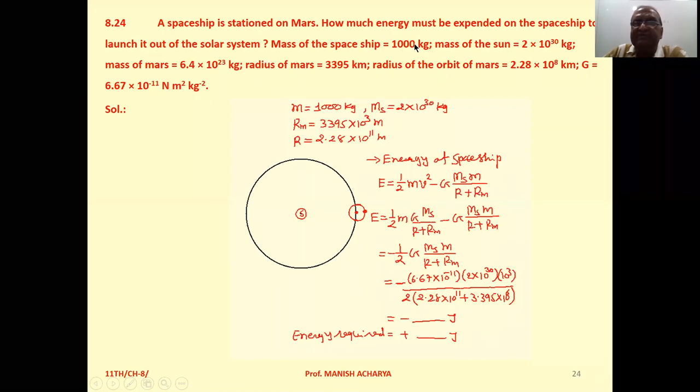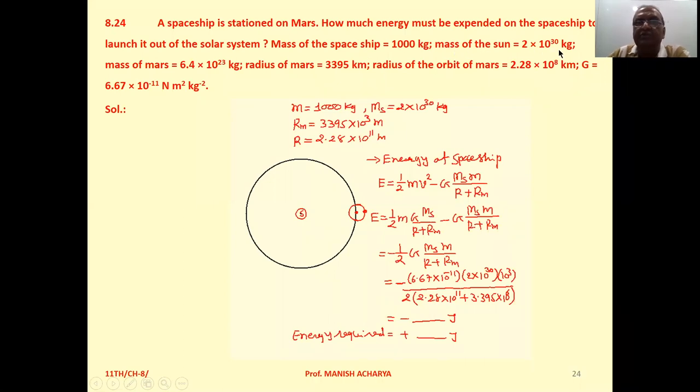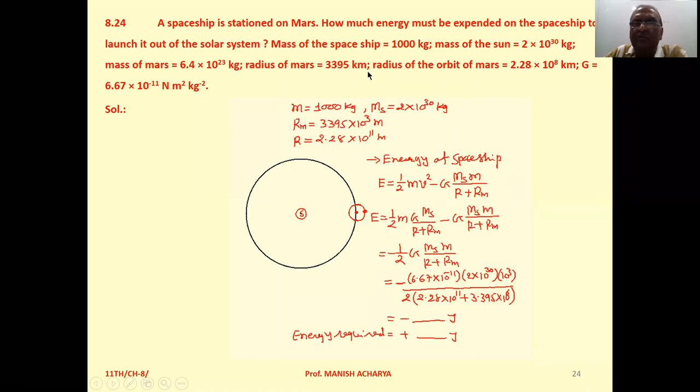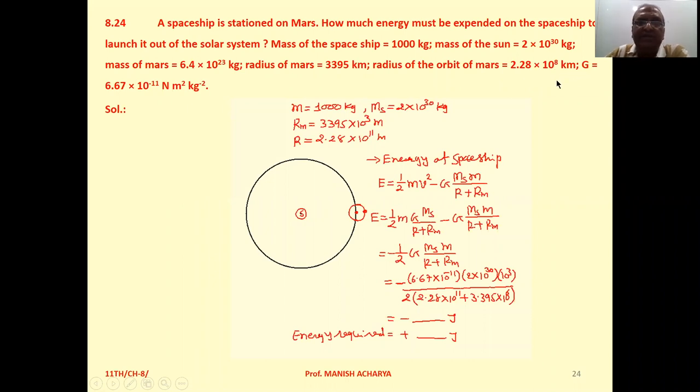Mass of the spaceship is 1000 kg, mass of the sun is 2×10³⁰ kg, mass of Mars is 6.4×10²³ kg, radius of Mars is 3395 km, radius of the orbit of Mars is 2.28×10⁸ km, G is 6.67×10⁻¹¹ N·m²/kg².